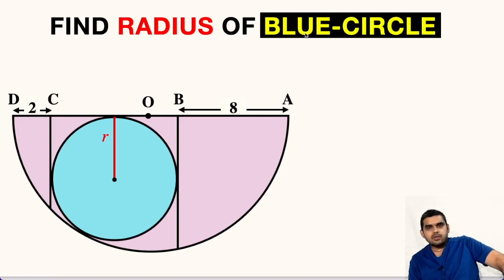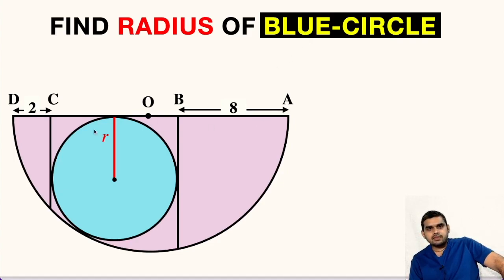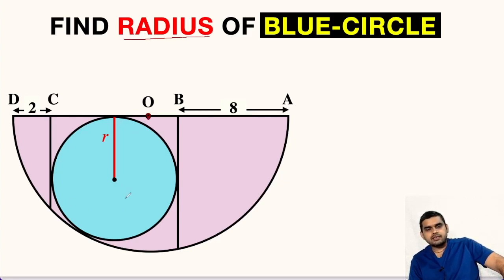Welcome to my YouTube channel. I am back with another interesting question. As shown in the figure, we have a semicircle whose center is at point O. Inside it we have a circle shaded in blue color, and we are asked to find the radius of this blue shaded circle. In order to solve this question, first let us assume that the radius of this semicircle is capital R.